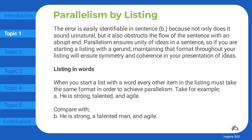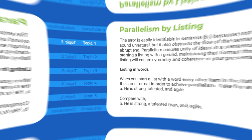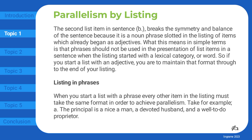Listing in words. When you start a list with a word, every other item in the listing must take the same format in order to achieve parallelism. Take for example: he is strong, talented, and agile. Compare with: he is strong, a talented man, and agile. The second list item in sentence B breaks the symmetry and balance of the sentence because it is a noun phrase slotted into a listing of items which already began as adjectives. Phrases should not be used in the presentation of list items when the listing started with a lexical category or word. So if you start a list with an adjective, you are to maintain that format through to the end of your listing.